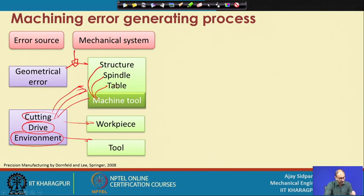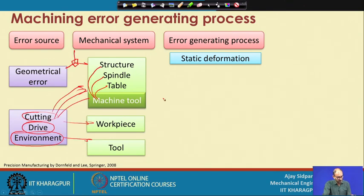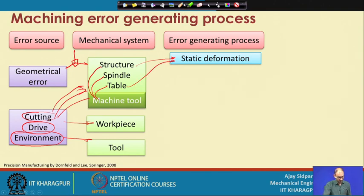If you add a camera, microscope, or force sensor, those are supplementary things and cannot be considered during this particular error generation mechanism. Error generating processes include static deformation - even without any machining operation, because of aging of the machine tool there can be static deformation in the structure and in the table, causing problems.